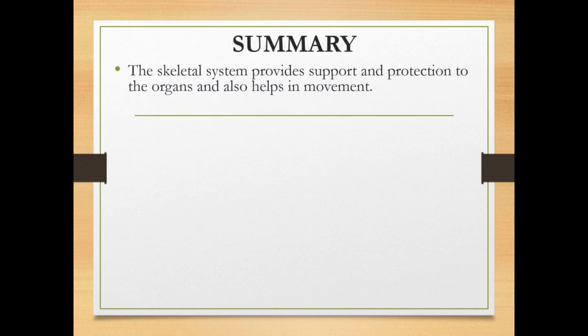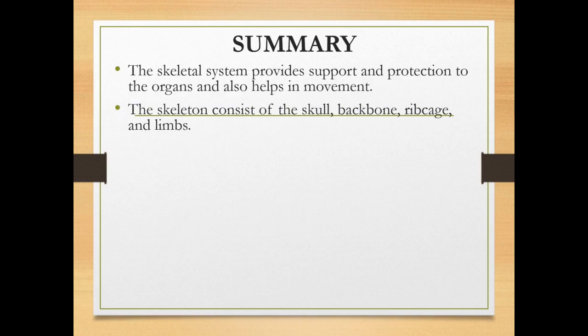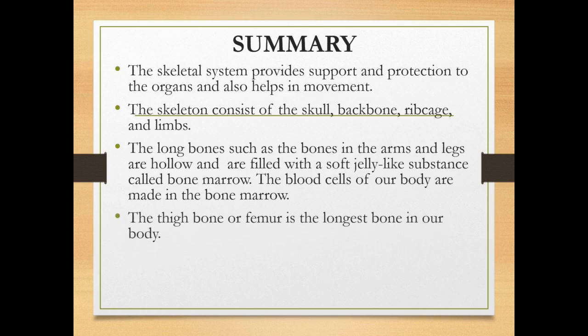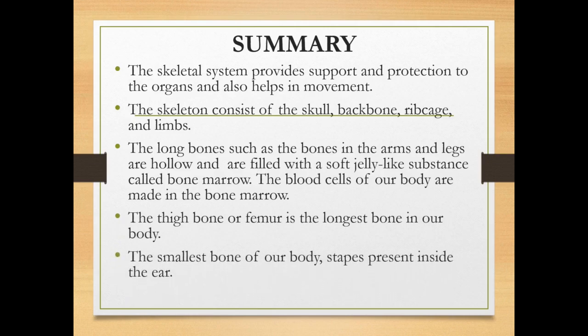Now we are coming to the summary. The skeletal system provides support and protection to the organs and also helps in movement. The skeleton consists of the skull, backbone, ribcage and limbs. The long bones in the arms and legs are hollow and filled with a soft jelly-like substance called bone marrow. The blood cells of our body are made in the bone marrow. The thigh bone or femur is the longest bone in our body, and the smallest bone is the stapes, present inside the ear.